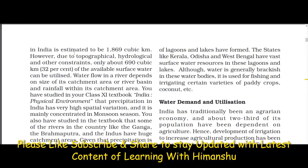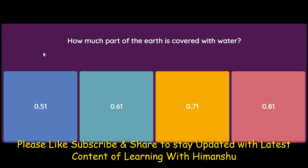Referring the book: in India the available surface water is estimated to be 1869 cubic kilometers, but due to topographical, hydrological and other constraints only about 690 cubic kilometers — that is 32 percent — of the available surface water can be utilized. How much of the earth is covered with water — 51, 61, 71, or 81 percent? The answer is 71 percent.